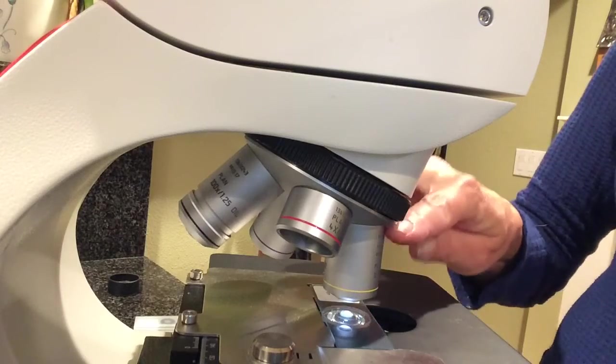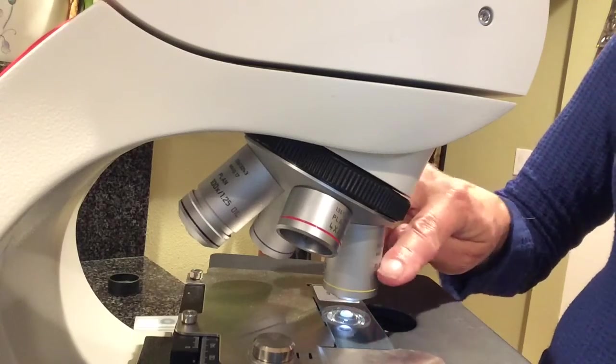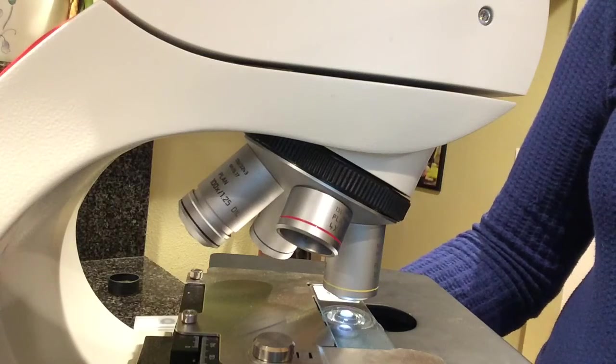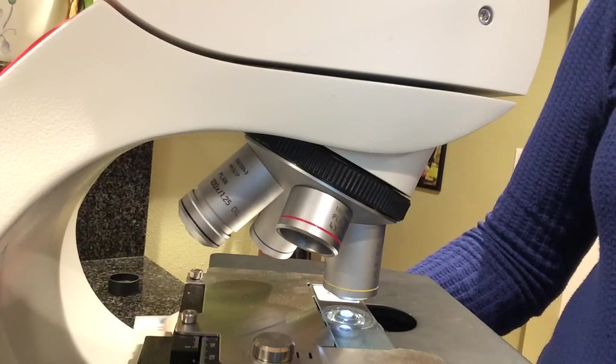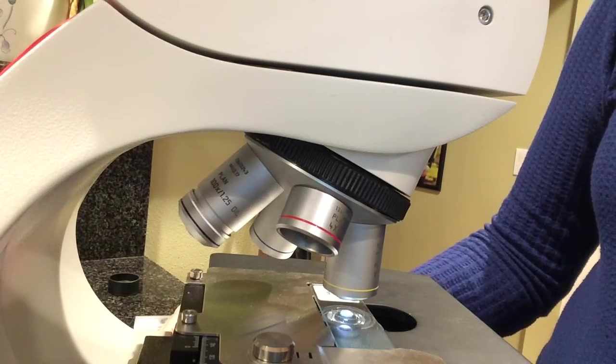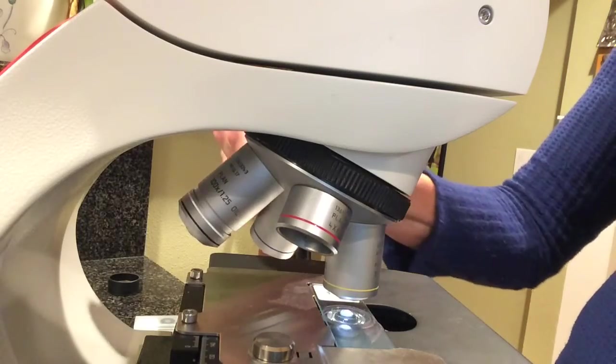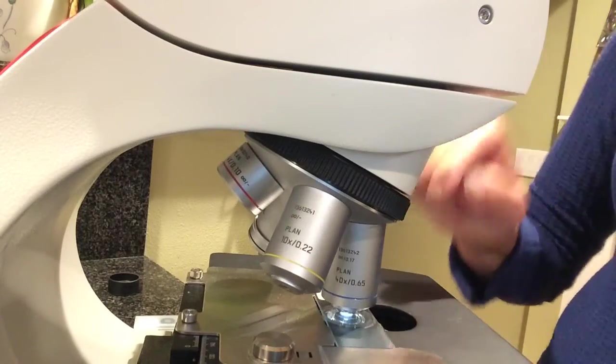Then you swing to the yellow-ringed lens, which is 10x, so 10 times 10 is 100x. And then remember you just barely change the fine focus so that it's nice and crisp and sharp. And then go to the—this is 40 times 10 is 400x—and again, only change the fine focus.